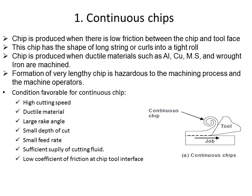Continuous chips are produced when ductile materials such as aluminium, copper, mild steel, and similar materials are machined. The material properties are also dependent on the chip formation. This results in a long chip formation during the machining process.